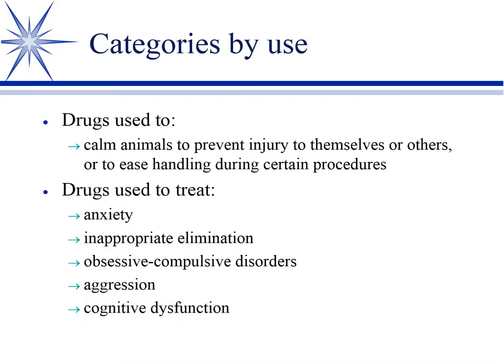I've divided this into two slightly different parts. The first is where I'll go through drugs used to calm animals so that they don't injure themselves or others, and to make it easier to do diagnostic and therapeutic procedures. Some of this, but not all, should be a refresh from anesthesia — you've seen these before, but primarily from the standpoint of pre-anesthetic use, not so much in actually handling the dysphoric or aggressive patient.